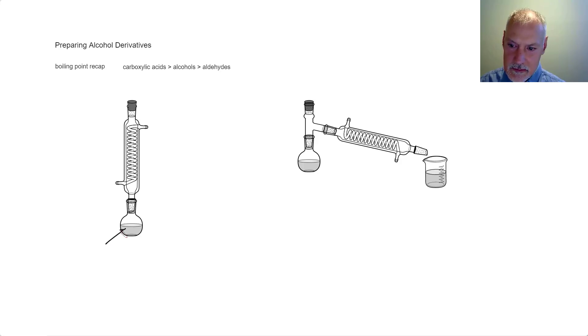I'm going to start down here in my container with my alcohol, propan-1-ol. And also present, some oxidizing agent. Upon heating, I'm going to convert that then into propanal. Propanal is the weakest of the intermolecular forces of my three substances. It's going to begin to boil and evaporate and make its way up here.